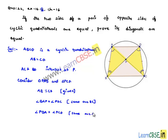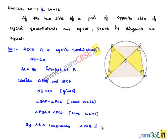Now, in both the triangles, we have two corresponding angles and a corresponding side as equal. Therefore, triangle PAB is congruent to triangle PCD. As two triangles are congruent, we can say their corresponding sides and corresponding angles will be equal.